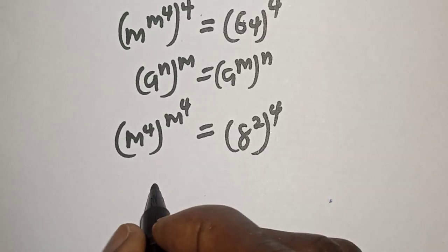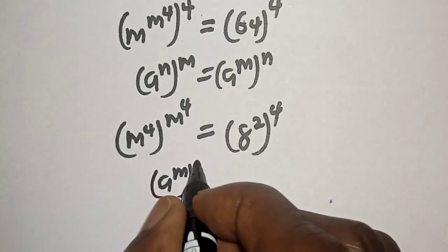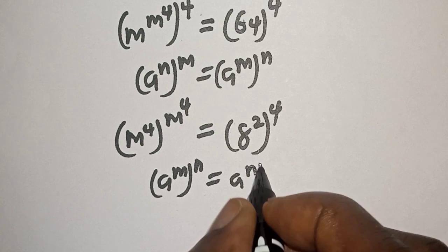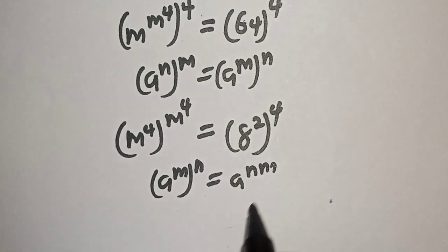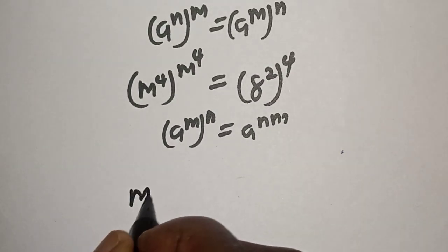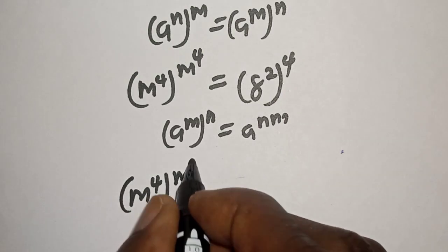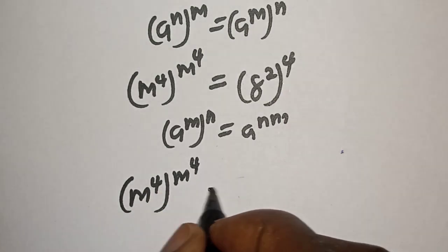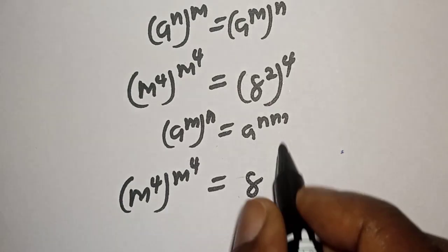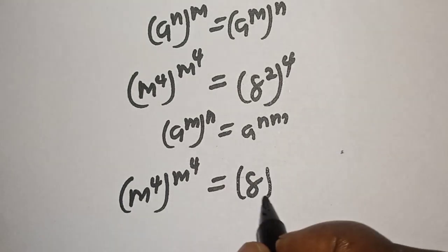Also take note of this rule: a raised to power m to the power of n is equal to a raised to power nm. Then we have m raised to power 4 to the power of m raised to power 4 is equal to 8 raised to power 2 times 4. That is 8.